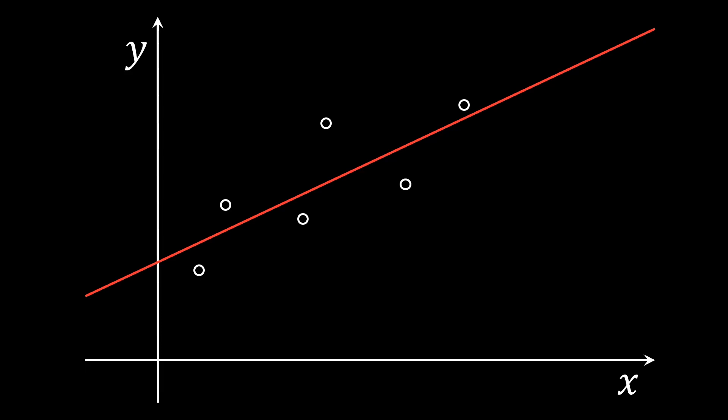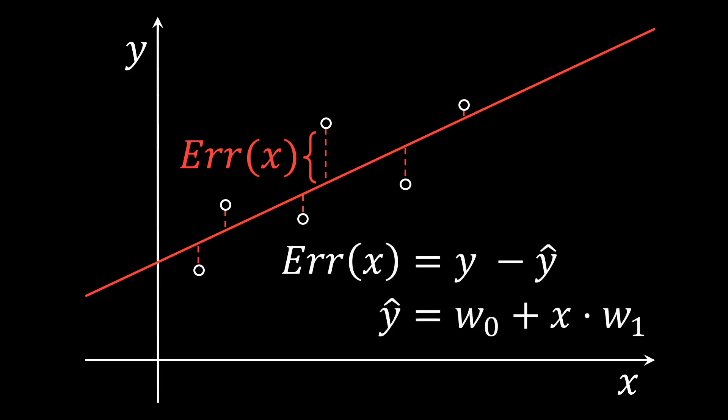We therefore define an error for the prediction. Specifically, for all samples in our data, we compute the difference between the actual value y and the predicted value for y, y hat. Here, the predicted value of y is given by the weights that define the line. We can therefore mathematically formulate the task of finding the best line as finding the weights that minimize the approximation error for all data points.